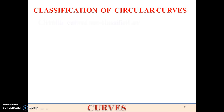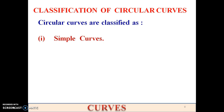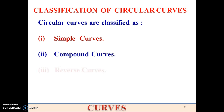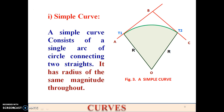The major classifications of curves are simple curves, compound curves, and reverse curves. A simple curve consists of a single arc of a circle connected by two straights AB and BC, and it has a radius of the same magnitude throughout — the radius remains constant from the start to the end of the curve.